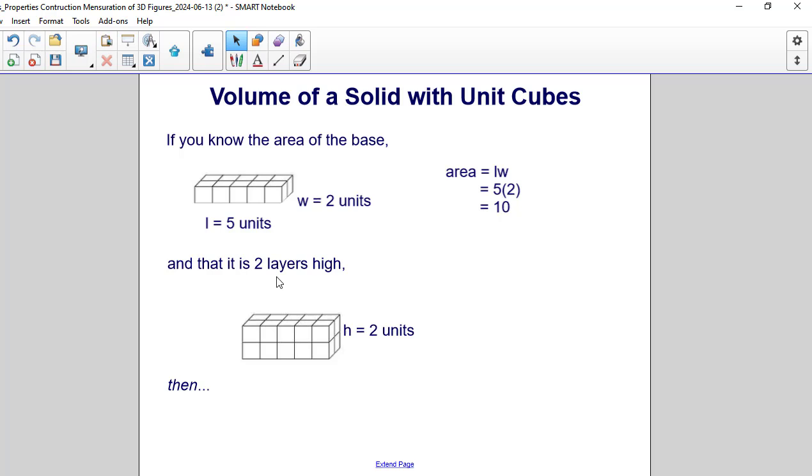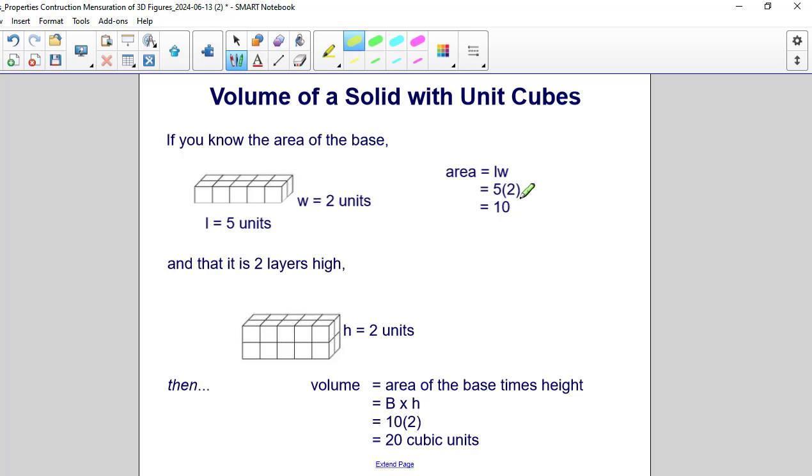And that it is two layers high. So we got two layers high. Then we know the volume is the area of the base times the height. So in mathematical terms, capital B represents the area of the base. And then H represents the height. We already calculated the area of the base is 10. That's right here.